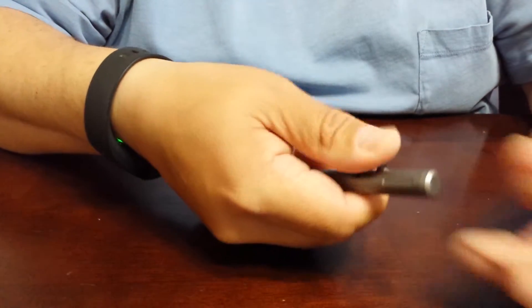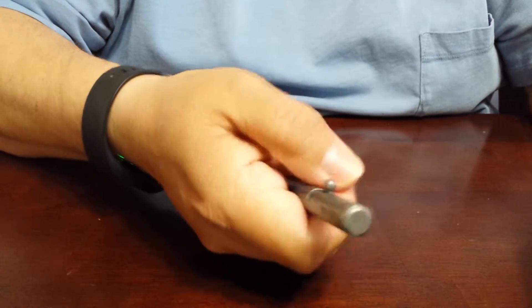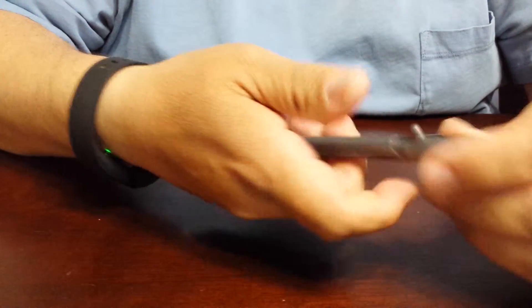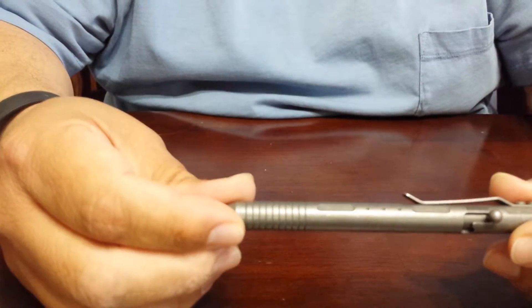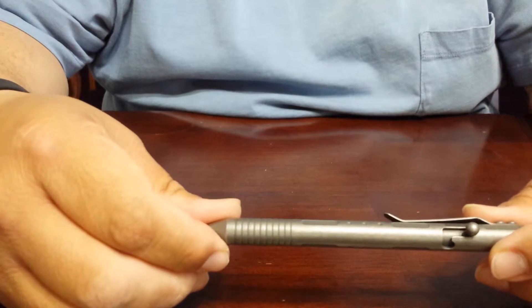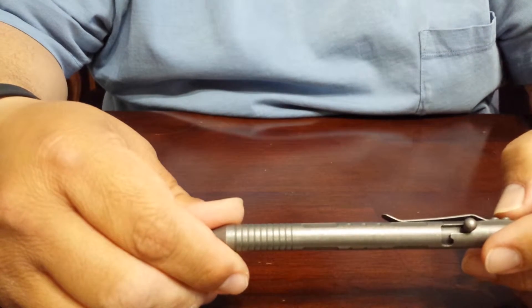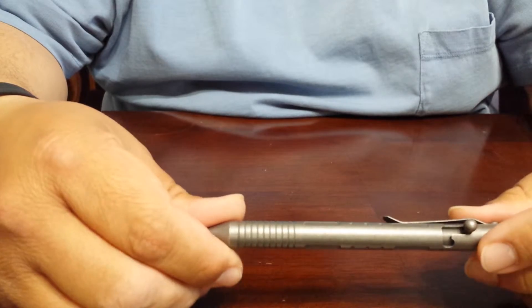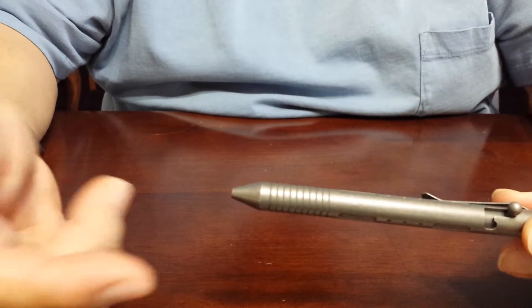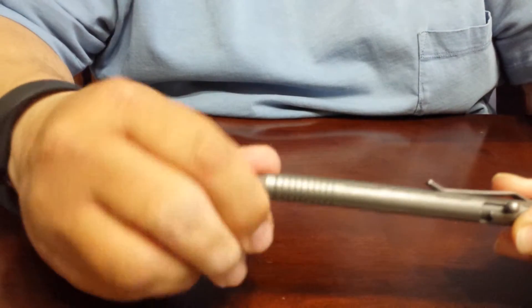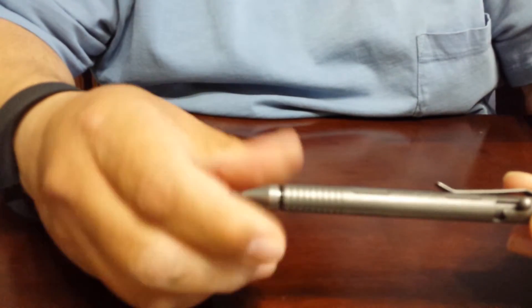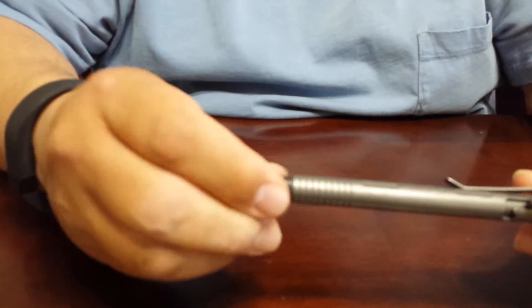As you can see, he was originally going to put a Fisher space pen refill in this, but he decided to go ahead and go with Schmidt easy flow 9000. You can't even tell where you would open this up, but you'll go ahead and unscrew it from down here. It has an o-ring right here.